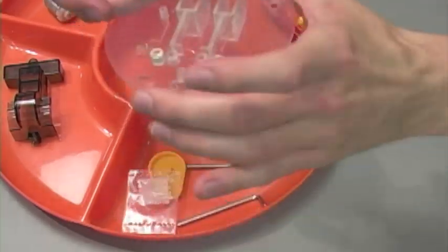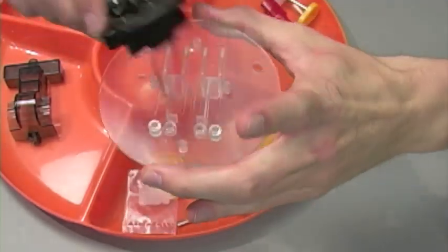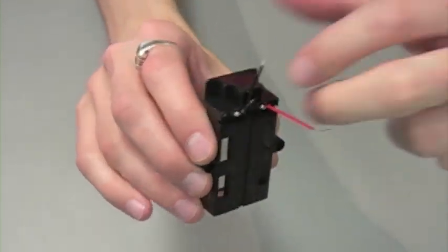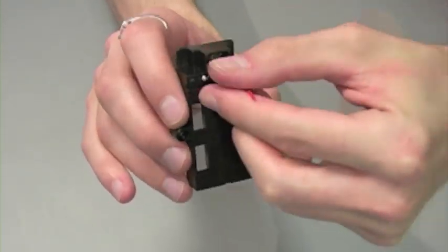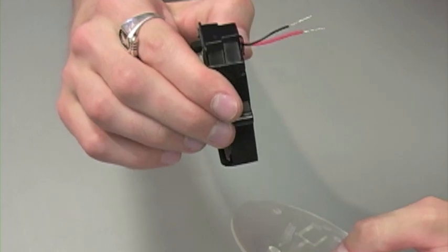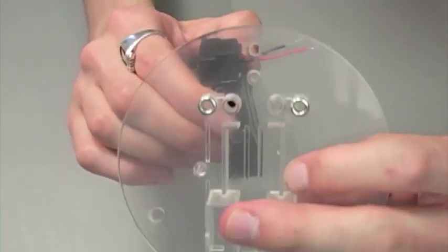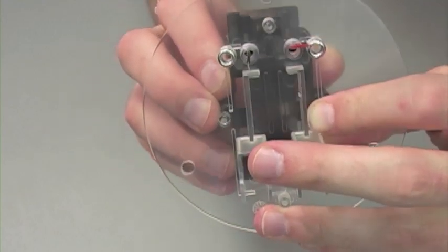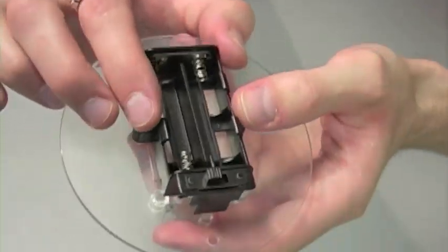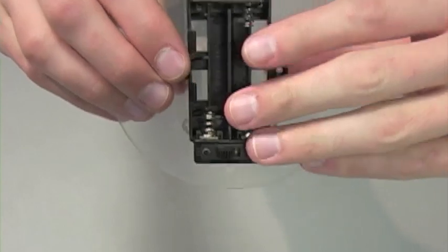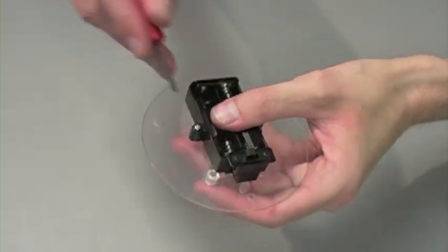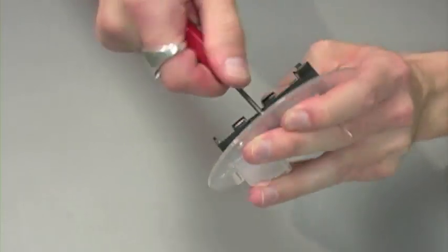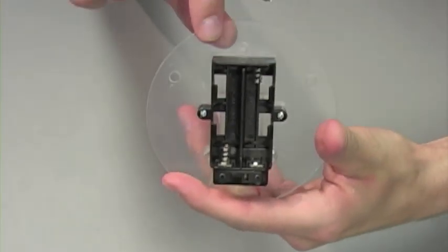For step one take your round plate and your battery pack. Make it so the wires from the battery pack are pointed. Then you're going to poke those wires through the round plate so that they come out on the other side and the battery pack secures on the opposite side. Attach using two of the small screws. Step one complete.